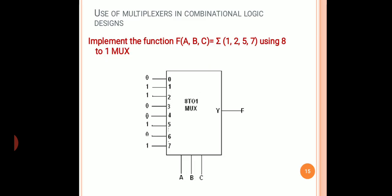The next topic is the use of multiplexers in combinational circuit design. A 3-input function f(A,B,C) = Σ(1, 2, 5, 7) is given in SOP form, and we have to implement this using an 8-to-1 MUX. In SOP form, the output should be 1 for the given minterms. We take one 8-to-1 MUX: the inputs corresponding to the minterms in the expression are connected to logic 1, and the remaining inputs are connected to ground.